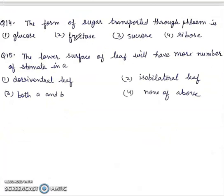Question 14: The form of sugar transported through phloem is glucose, fructose, sucrose, ribose. Right answer will be sucrose. Third.